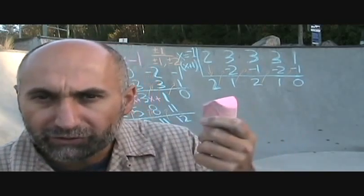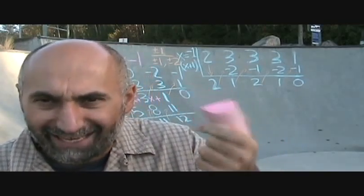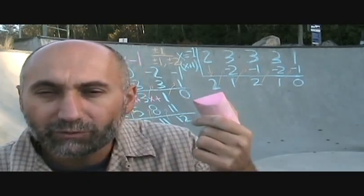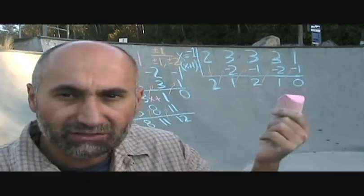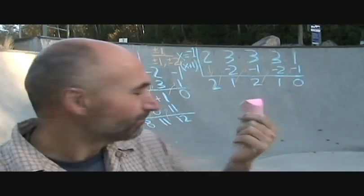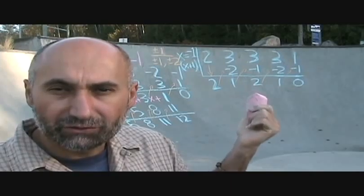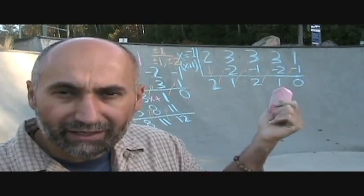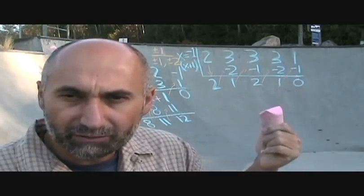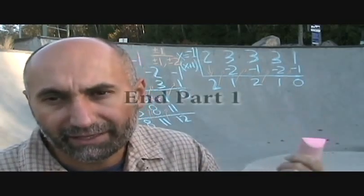For this next polynomial, 2x cubed plus x squared plus 2x plus 1, let's consider trying x equals 1 again. Actually, since all the coefficients are positive, multiplying by 1 just adds everything together, so the remainder can't be zero. We'll skip x equals 1 and go straight to trying x equals negative 1.